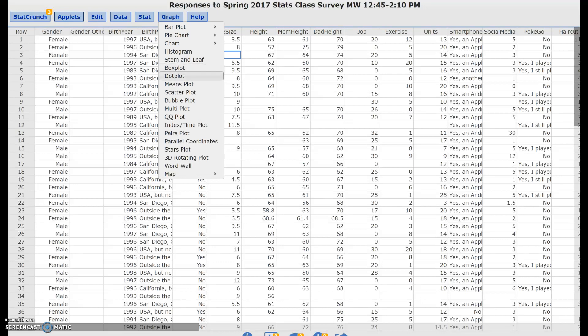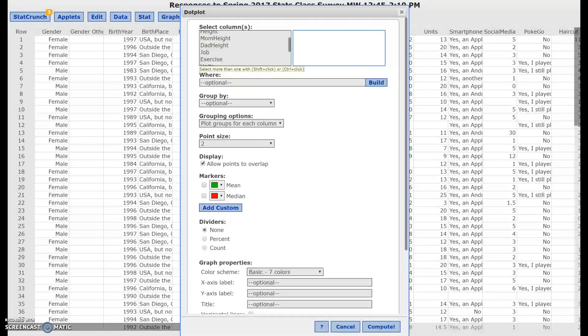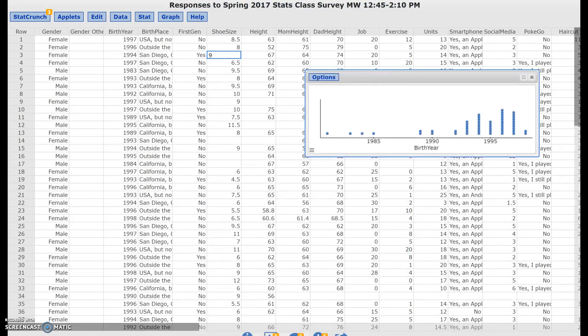We're going to look for dot plot. Here's dot plot. What can I look at? Height probably not the best, but I don't think I asked for age. What we can maybe look at is birth year. Let's see what happens. So we're going to go ahead and compute this.